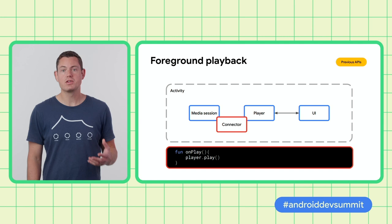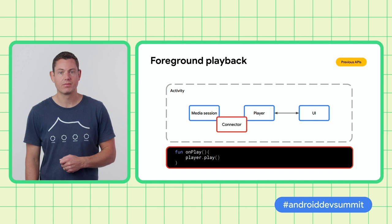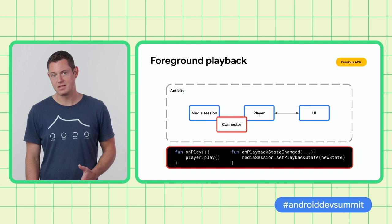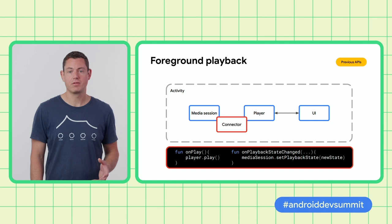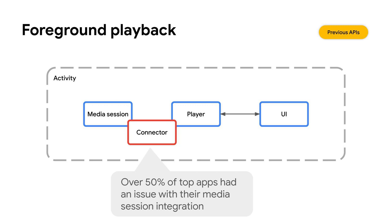For example, when the media session receives a play command, it calls its onPlay callback method. This is implemented by the connector, which then tells the player to play. The connector must also listen for events from the player and update the media session state. If you extend this to all possible commands which the media session can receive, and handling the various player states, you end up with a lot of code — much of it more complicated than these minimal code snippets. This can lead to bugs. In fact, during internal testing some years ago, we found that over 50% of top apps had at least one issue with their media session integration.